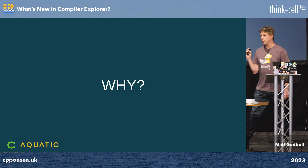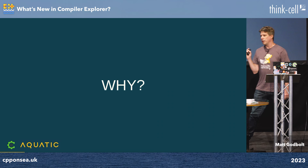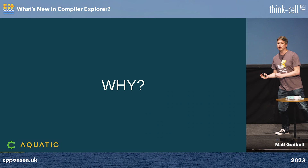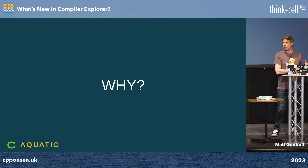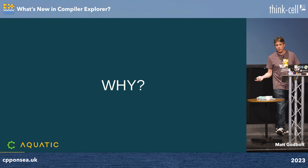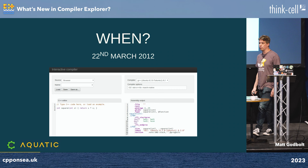Why does Compiler Explorer exist? The way that it's best described by a colleague of mine is it's an argument ender. You can take a piece of code that you think compiles in a particular way and show your colleague that it does in fact work as well as their code. In my case, it's to take something more human readable and show someone it compiles to the same assembly as their hand-coded massive C-like code. That's why Compiler Explorer exists, but it's used by other people for a lot of other things.